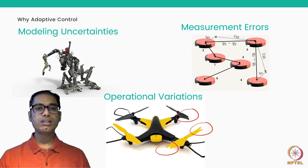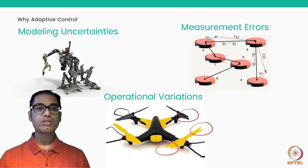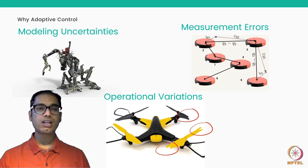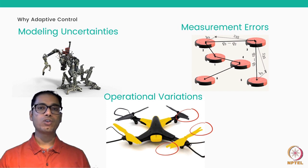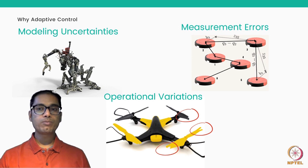If you use a traditional fixed-gain controller, you would require very conservative gains to provide robustness against such errors, which are typically characterized as disturbances. However, certain errors — especially measurement errors — are non-disturbances and scale with the control magnitude. Therefore, adaptive control does not just give robustness but attempts to identify these parameters, recovering ideal performance. This is why adaptive controllers have been among the most popular real flight controllers in industry.